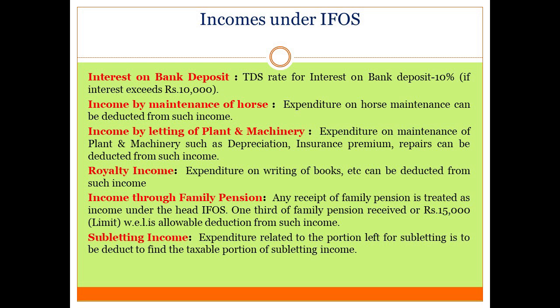Income under IFOS continues. Interest on bank deposits is taxable under IFOS; TDS is 10% and will be deducted by the bank only if the interest income exceeds Rs. 10,000. Income by maintenance of horses for races: if an assessee obtains income from maintenance of horses for races, that income is treated as taxable under IFOS and expenditure related to horse maintenance can be deducted. Income by letting of plant and machinery: any income gained from letting of plant and machinery is taxable under IFOS. Royalty income: any expenditure related to writing of books or patent development, etc., can be deducted from such income.